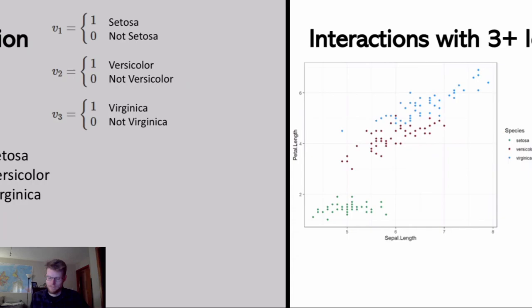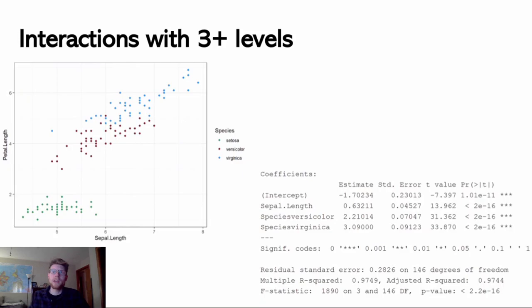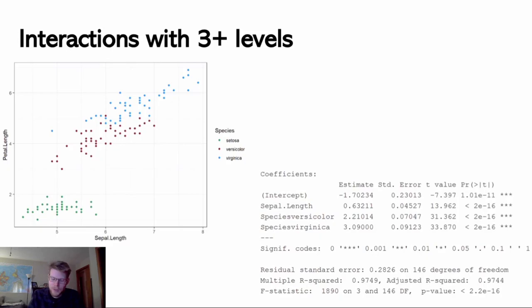We'll typically use the intercept-based parametrization. Now, what if we want to model interactions when we have three or more levels? Here's a case where we're trying to predict petal length from sepal length. You'll notice this doesn't seem to be quite additive with species — the line I would fit for one species is going to have a different slope than for the others. So it looks like there is an interaction between species and sepal length: the value of sepal length determines how much effect we see because the amount we adjust between species now depends on the sepal length.